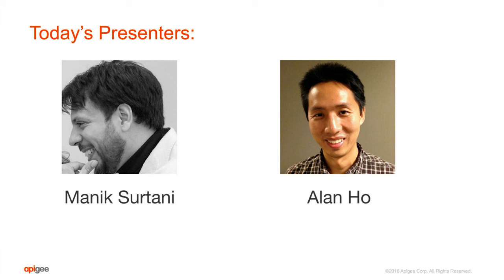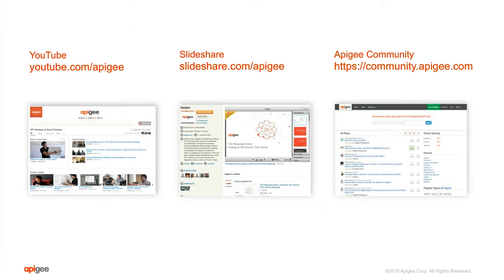My name is Alan Ho. I lead our developer evangelism at Apigee. We have a community page and we will also be putting these slides up on SlideShare, and you will also be able to view it on YouTube.